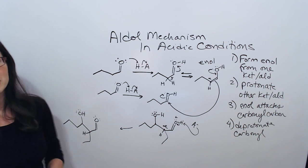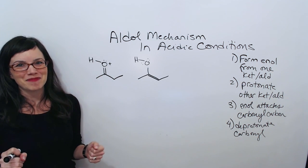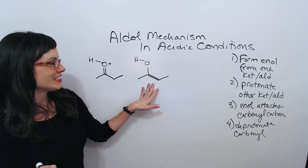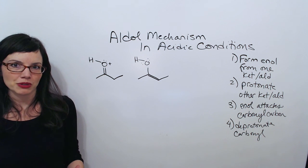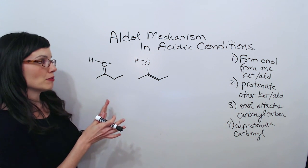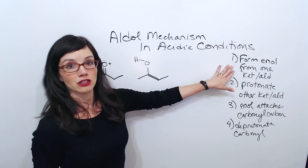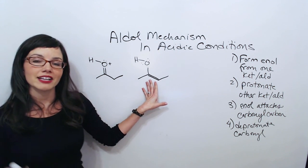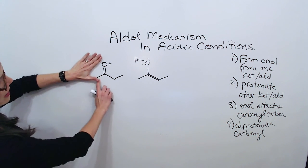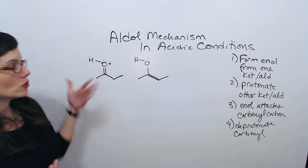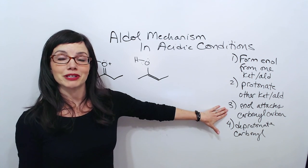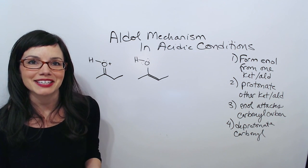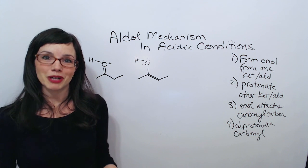Are you ready to test yourself? This is the time when you can practice the more difficult parts of this mechanism. I've already done step one — I have taken a ketone or aldehyde and formed an enol. In this case, we had a ketone and I formed an enol from it. Then I took another version of that ketone and protonated it. So right now we're at step three where the enol attacks the carbonyl carbon. If you were going to have this enol attack the carbonyl carbon, what would that mechanism look like in acidic conditions? Why don't you pause the video and draw your part, and then we'll come back together and see what you've got.